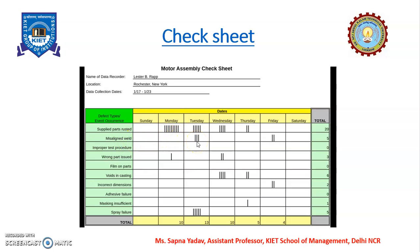For example, on Tuesday, three lines represent the occurrence of a defect three times on that particular day. One line represents the defect 'wrong part issued' occurring one time on Monday. Later on, we convert this data into numerical data. Overall, this is a very simple tool to organize and collect data.